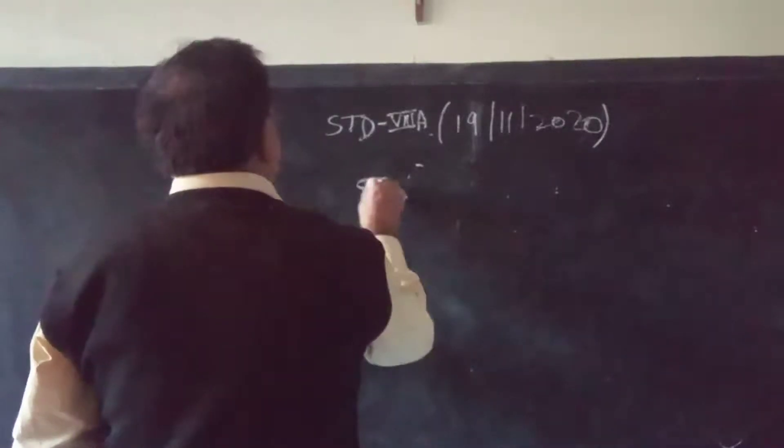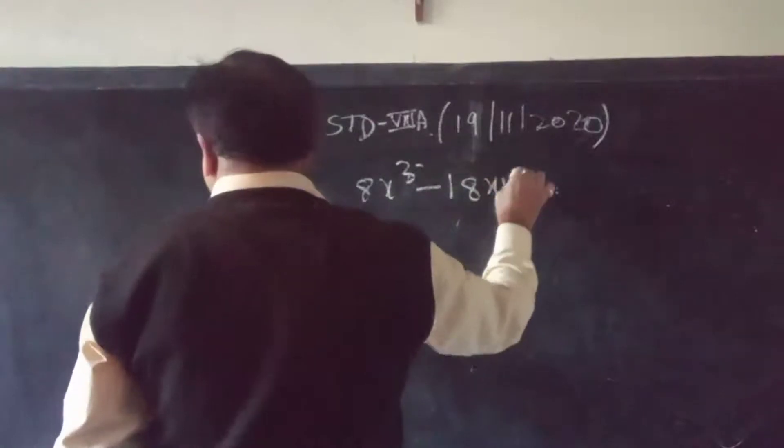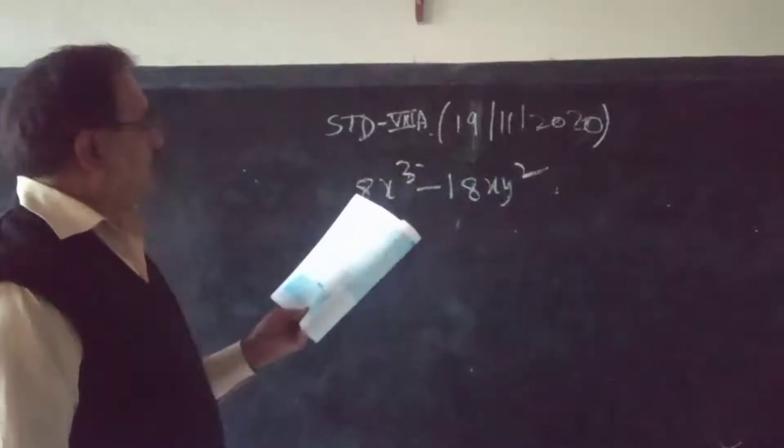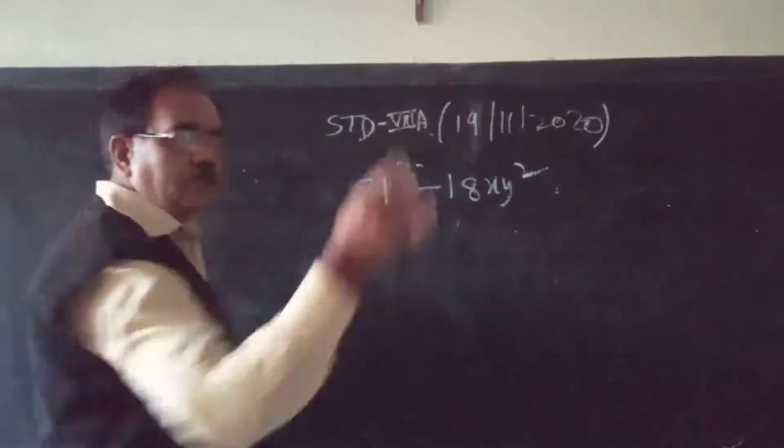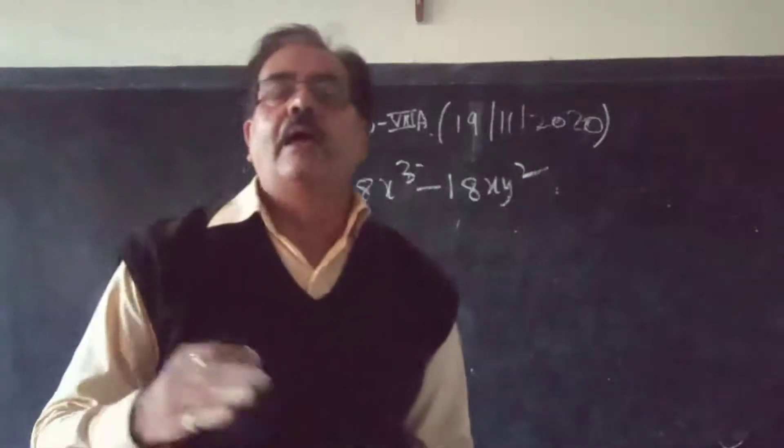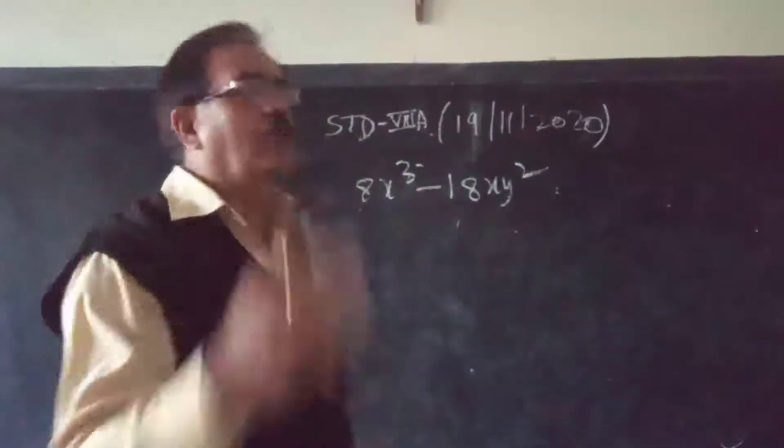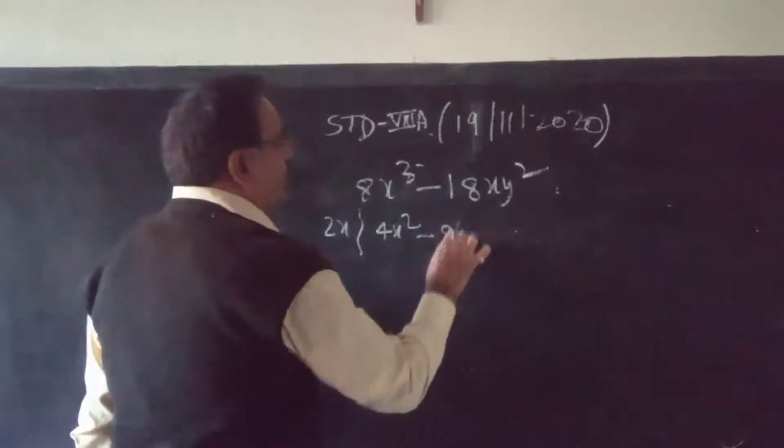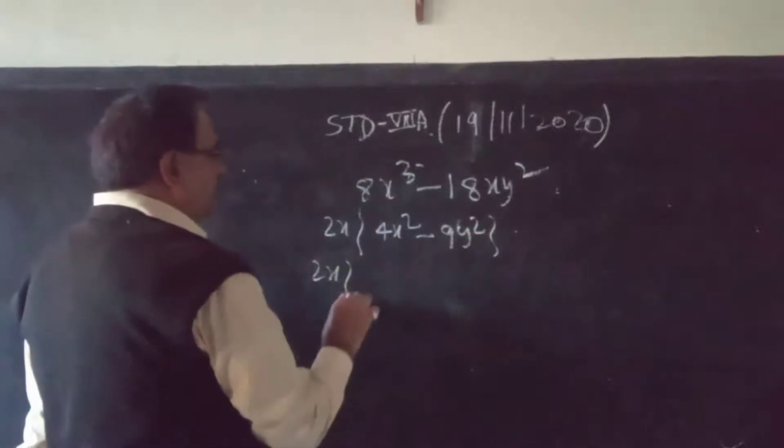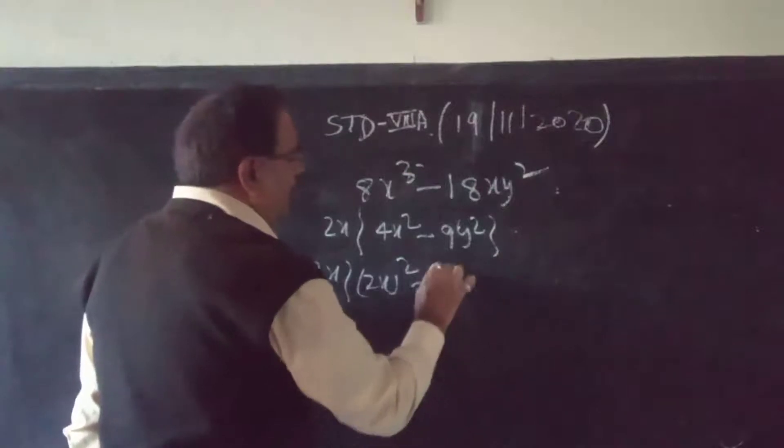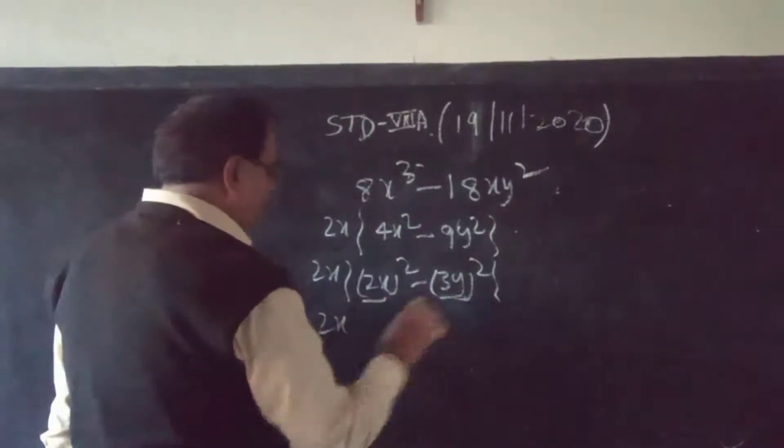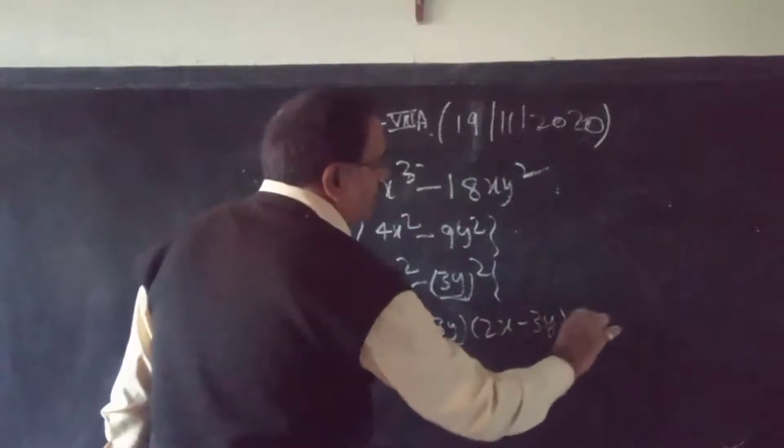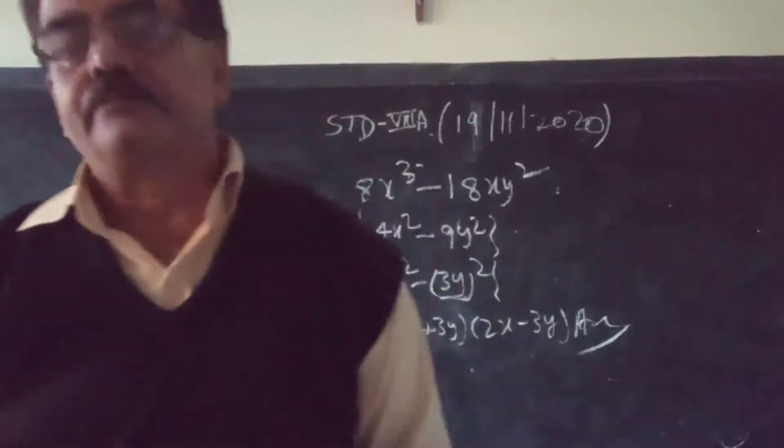One more: 8x squared minus 18y squared. First of all, this is not a perfect square. 8 and 18 are also not perfect squares. So if it's not a perfect square from A squared minus B squared, first take the common factor. What is common? 2 and x are common. Then what's left? 4x squared minus 9y squared. Now 2x times 2x squared minus 3y squared. So 2x times 2x plus 3y times 2x minus 3y. Clear? Any problem?